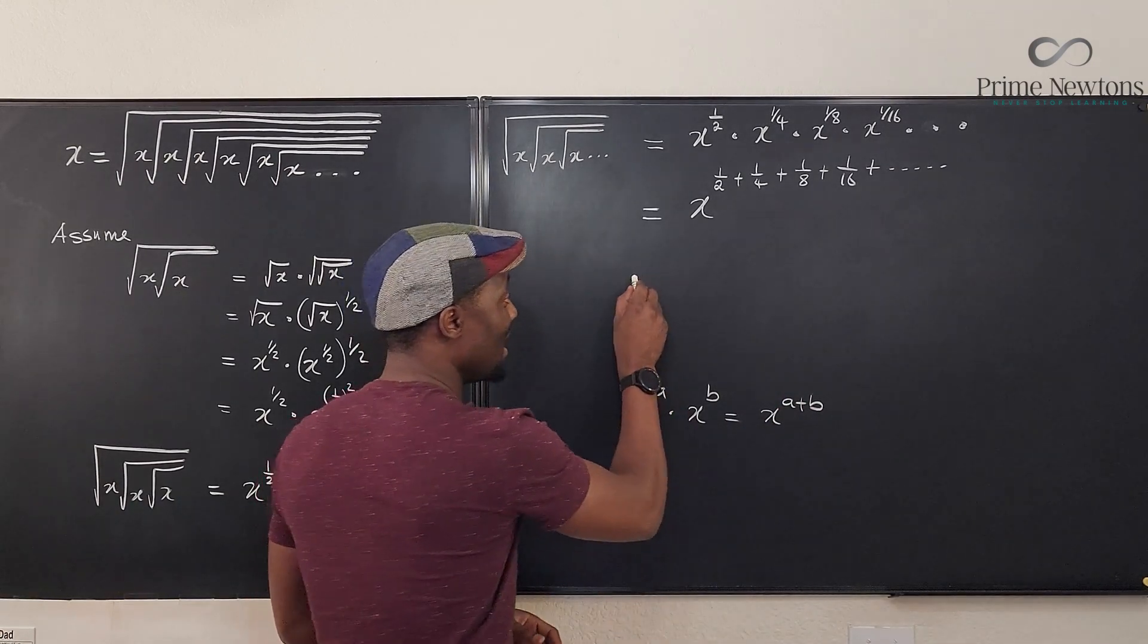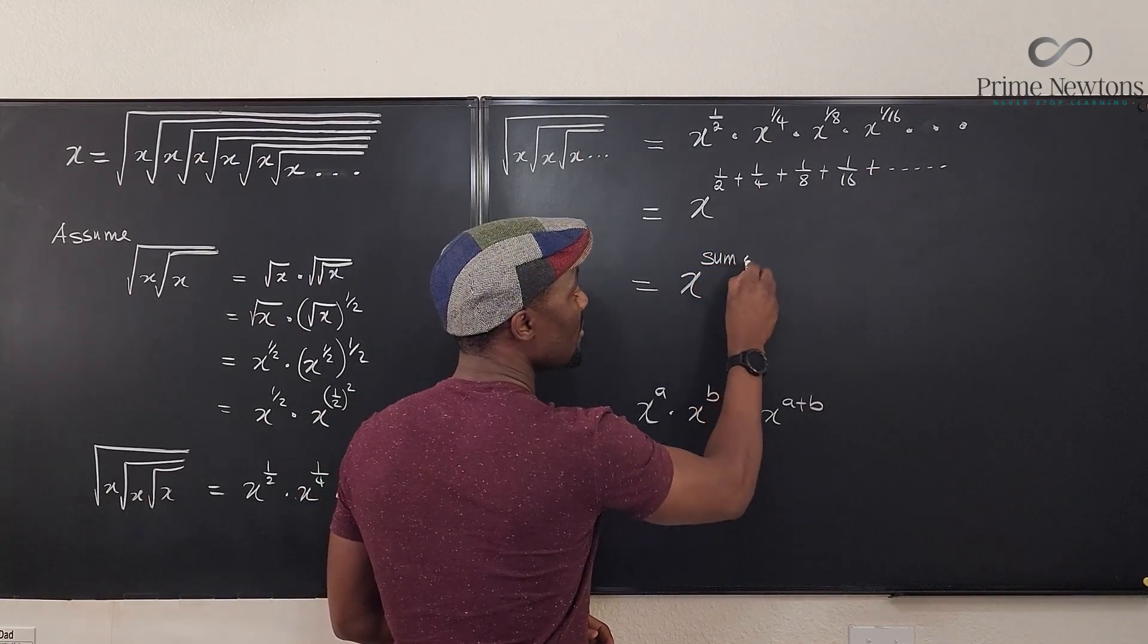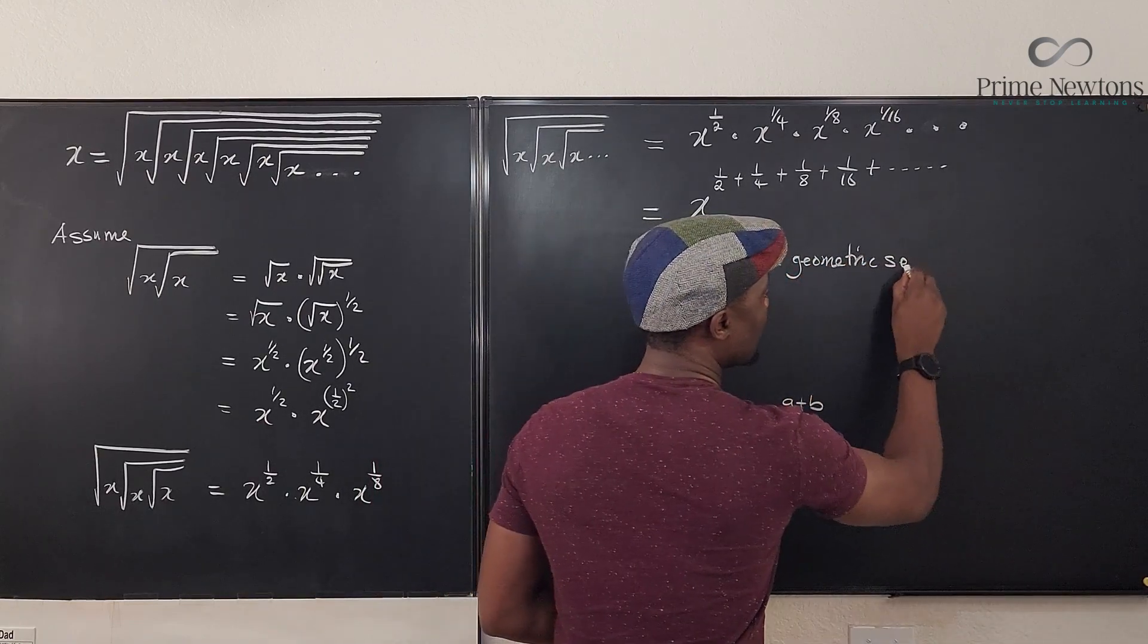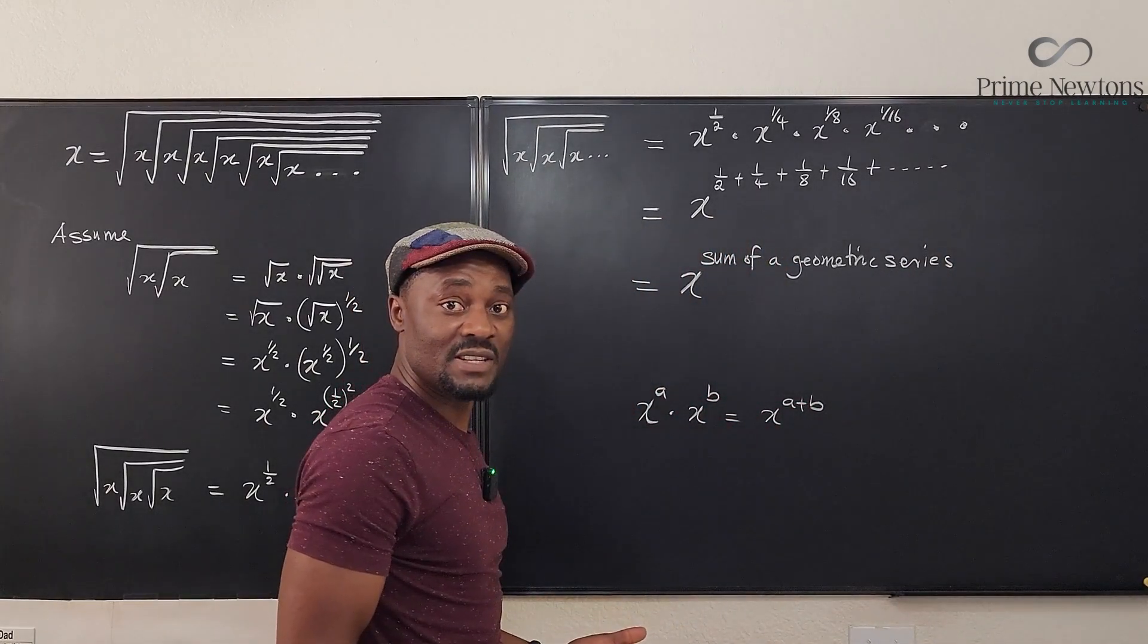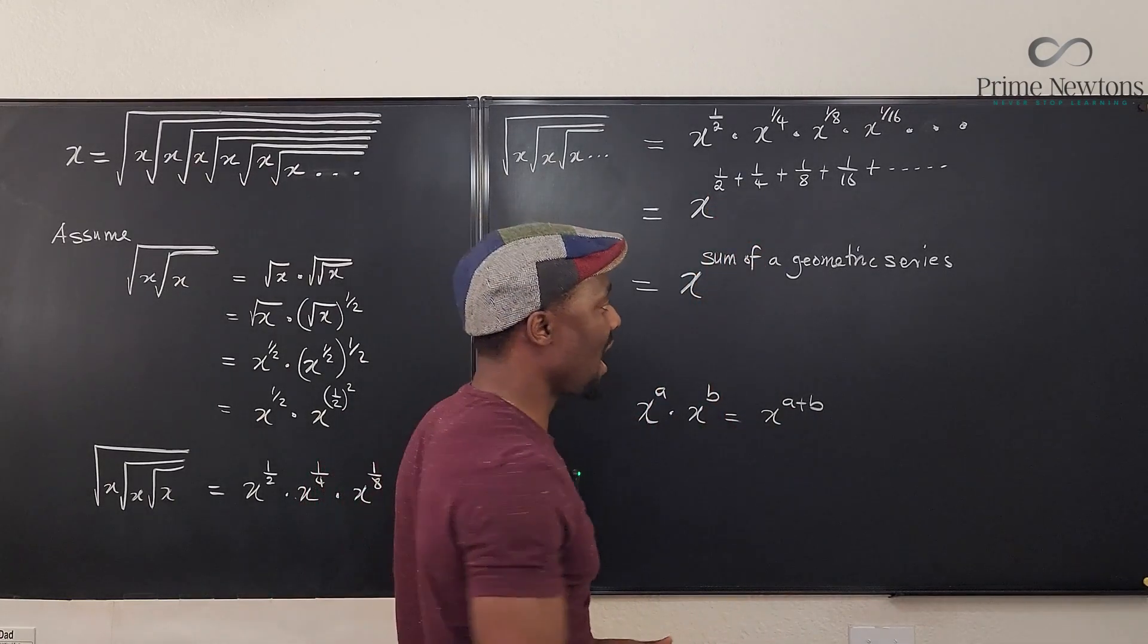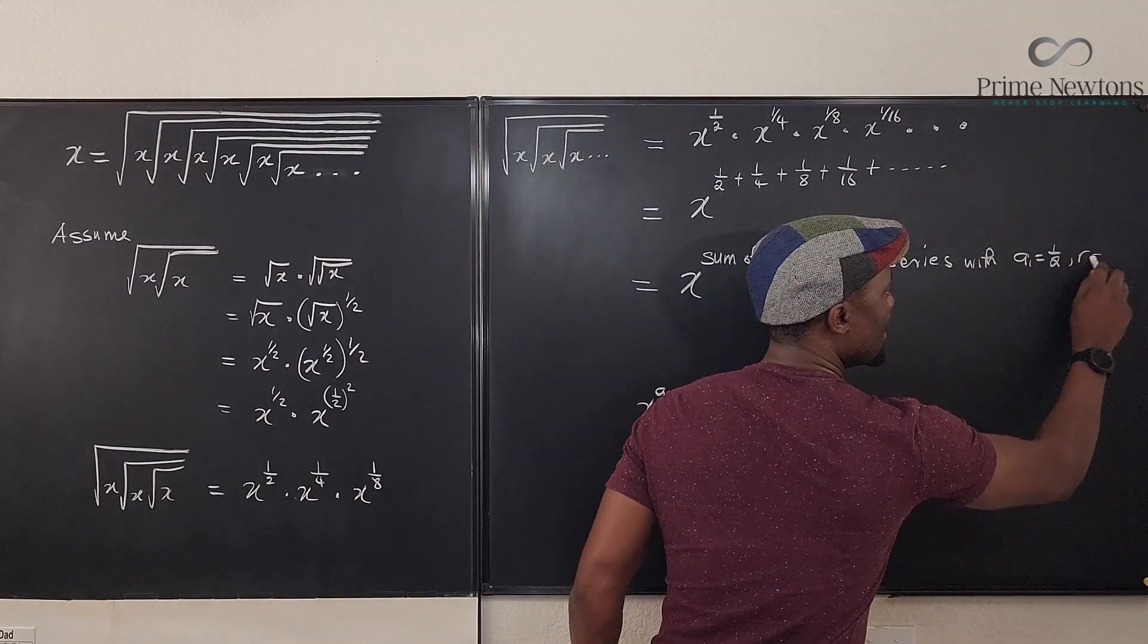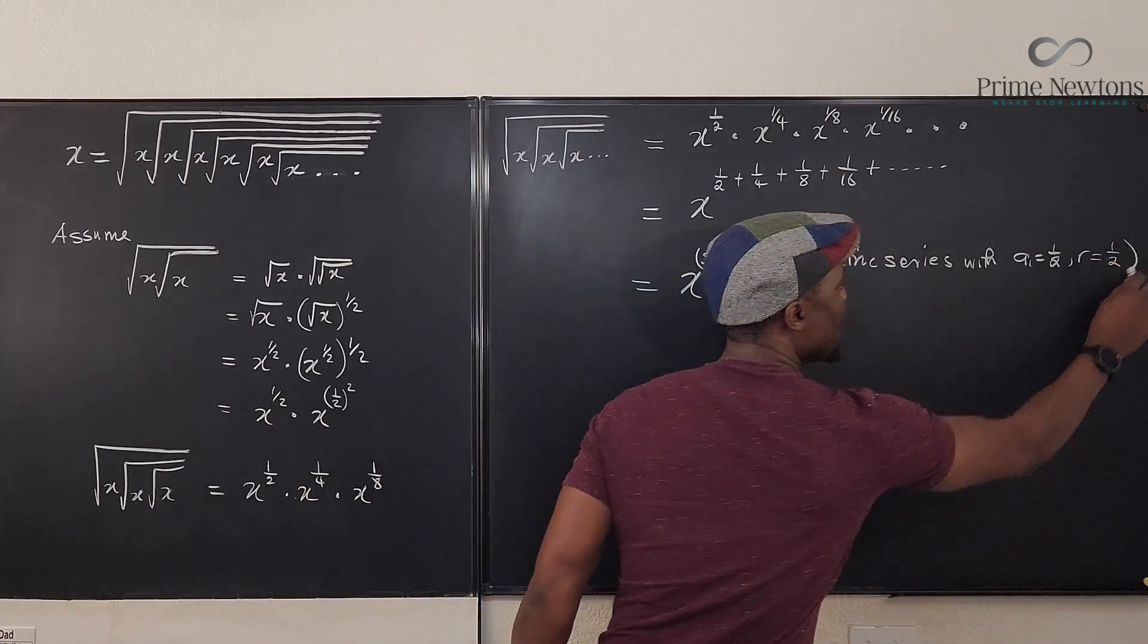So what we have here is equal to x raised to power the sum of a geometric series. And what is the sum of the geometric series? It has the first term one half and the common ratio is one half. That's what you've got as the exponent here.